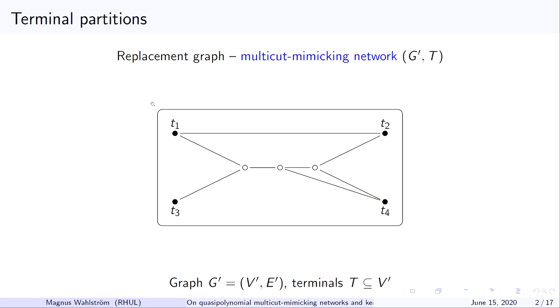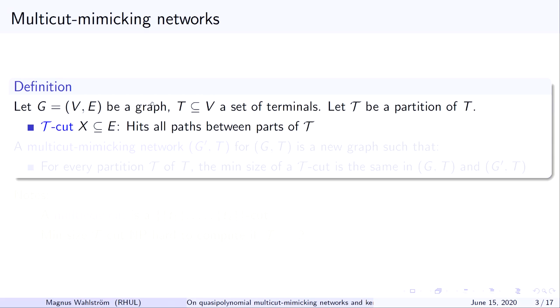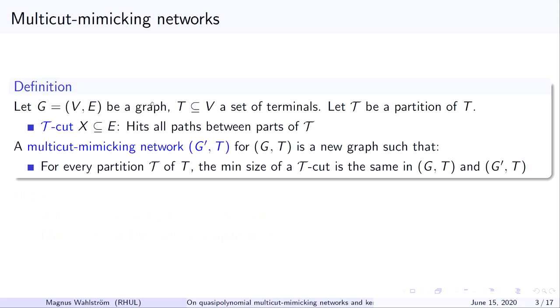To put it in writing, we have a graph G with terminals T and a partition of T. A cut for the partition is a set of edges that hits all paths between distinct parts of the partition. And the multi-cut mimicking network is a graph G prime containing T, such that for every partition of the terminal set, the size of a cut is the same.